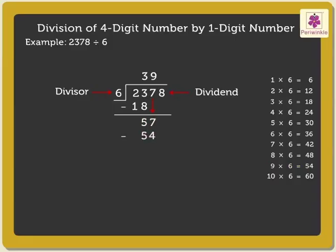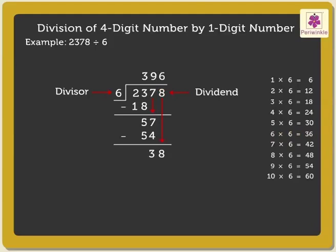Subtract 54 from 57, which is equal to 3. Now, bring down the next digit, that is 8. Here, we compare 38 and 6. 38 is greater than 6, so divide 38 by 6. The nearest product is 36. So, we write 6 above the 8. As we know, 6 into 6 is equal to 36. Write the number 36 under 38. Subtract 36 from 38, which is equal to 2.